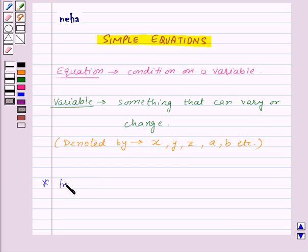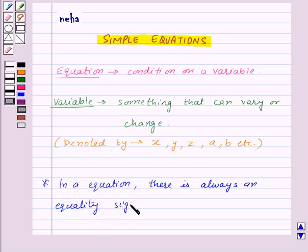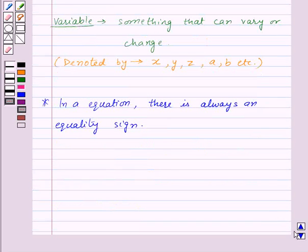there is always an equality sign. For example, 4x plus 5 is equal to 25 is an equation.